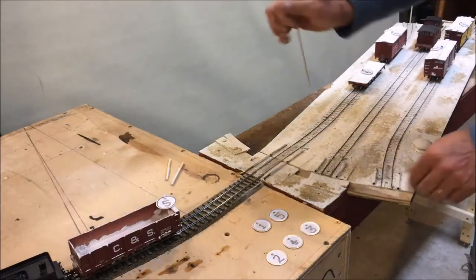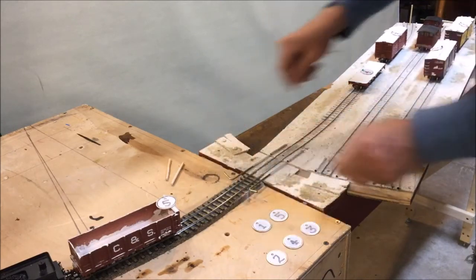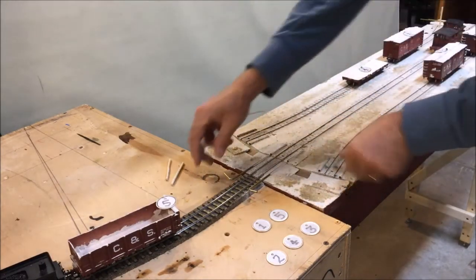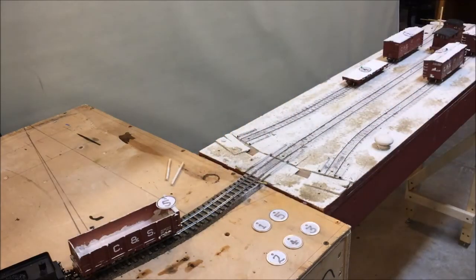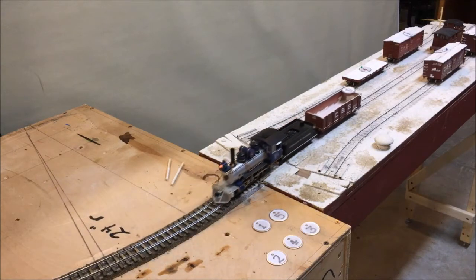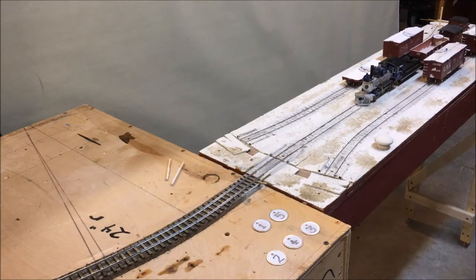Now car number five is in a position where we can put it in front of the caboose according to the randomly generated coin medallion switch list. So let's go ahead and put car number five next to the caboose. Now let's go get car number one.